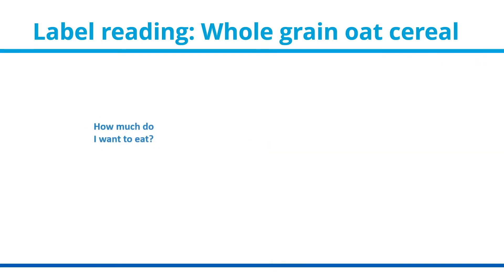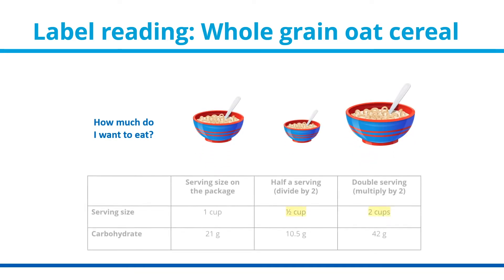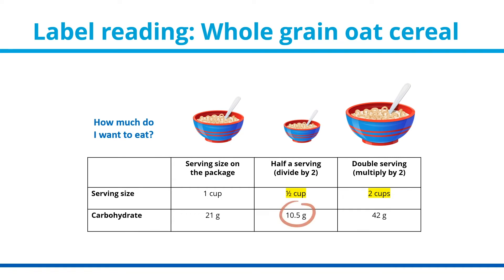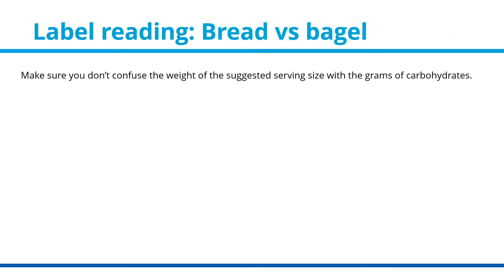But if you only want to eat half a cup of cereal, you need to divide the amount of carbohydrates in half, giving you 10.5 grams of carbohydrates. If you want to eat 2 cups of cereal, you need to double the amount, giving you 42 grams of carbohydrates. Also, make sure you don't confuse the weight of the suggested serving size with the grams of carbohydrates — both are measured in grams.